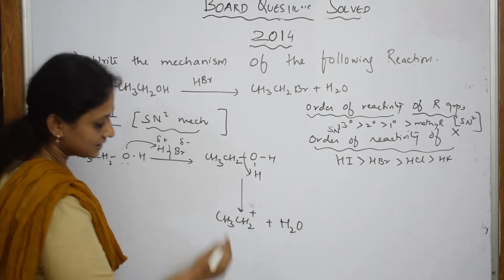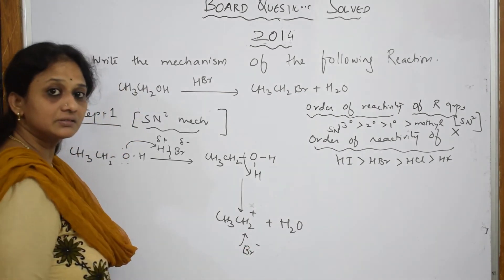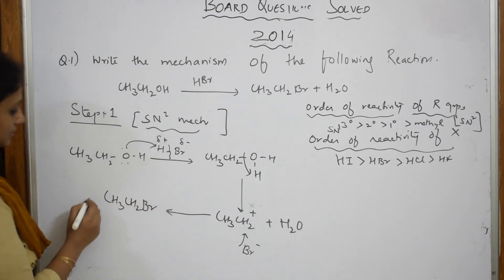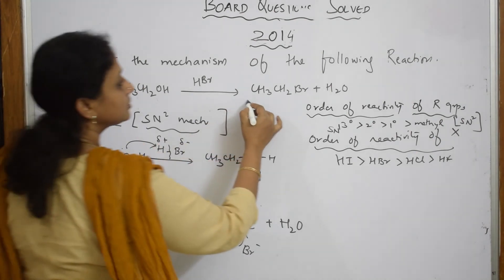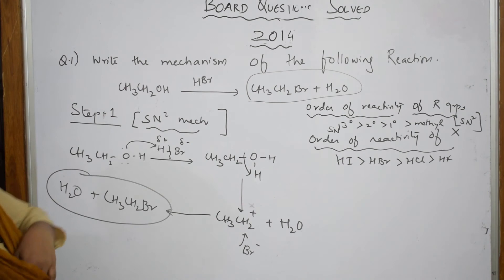Your bromine or the nucleophile is still there. This bromine is going to attack. What do I get? I get a product like CH3 CH2 BR plus your water. Just observe carefully. This is the product which I have got from here. This is also the same product.